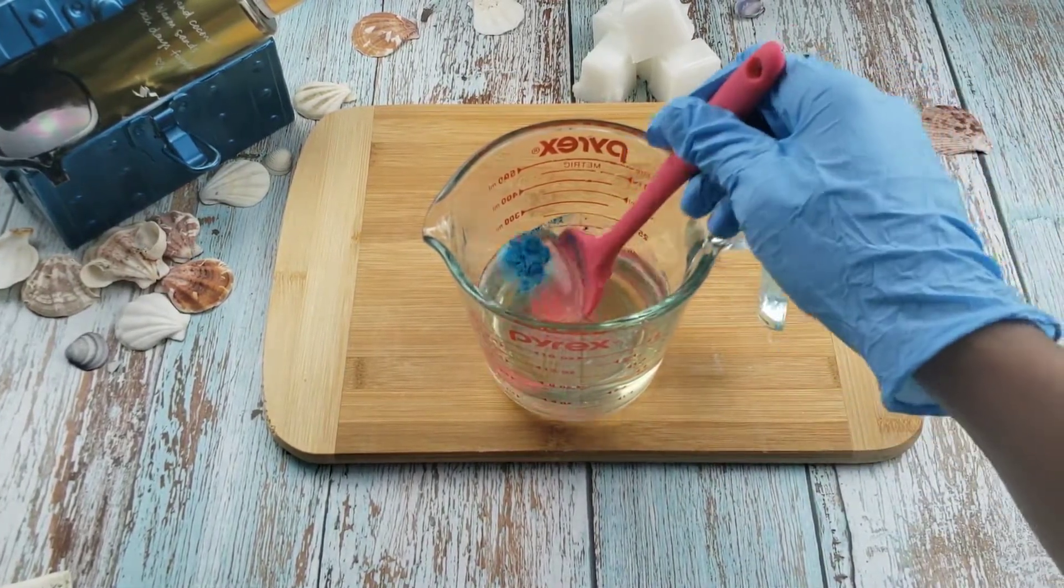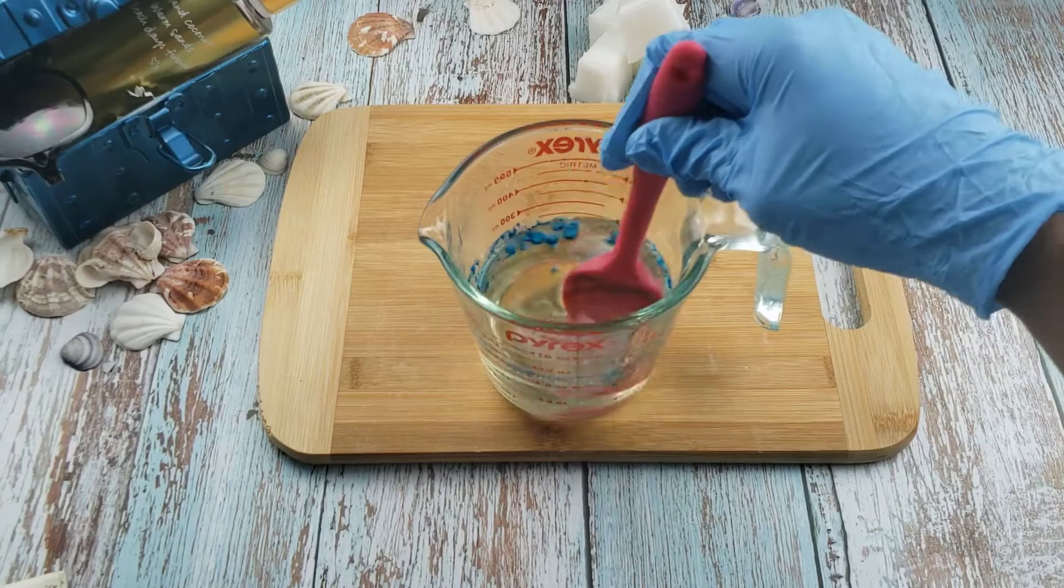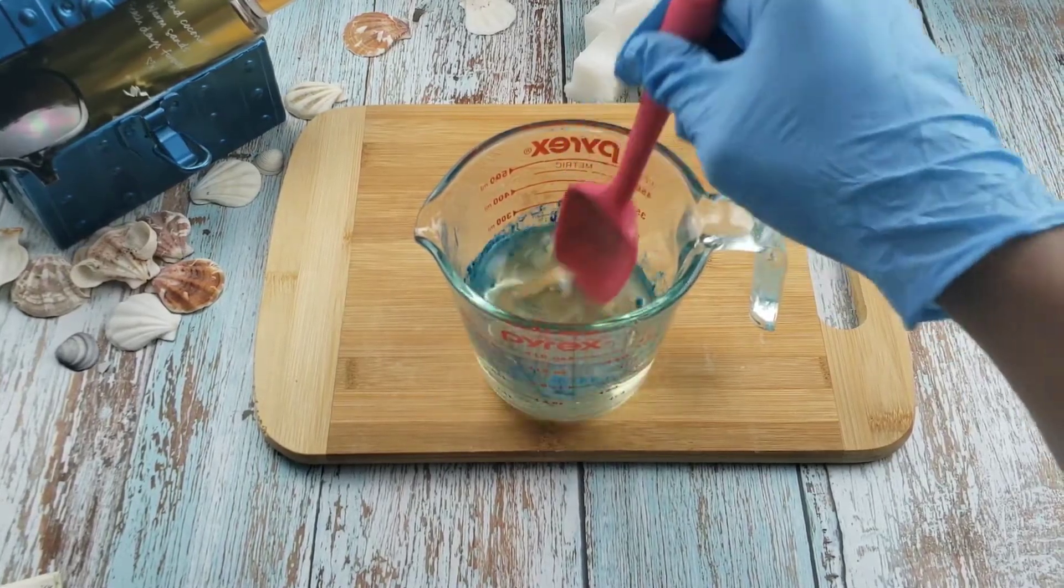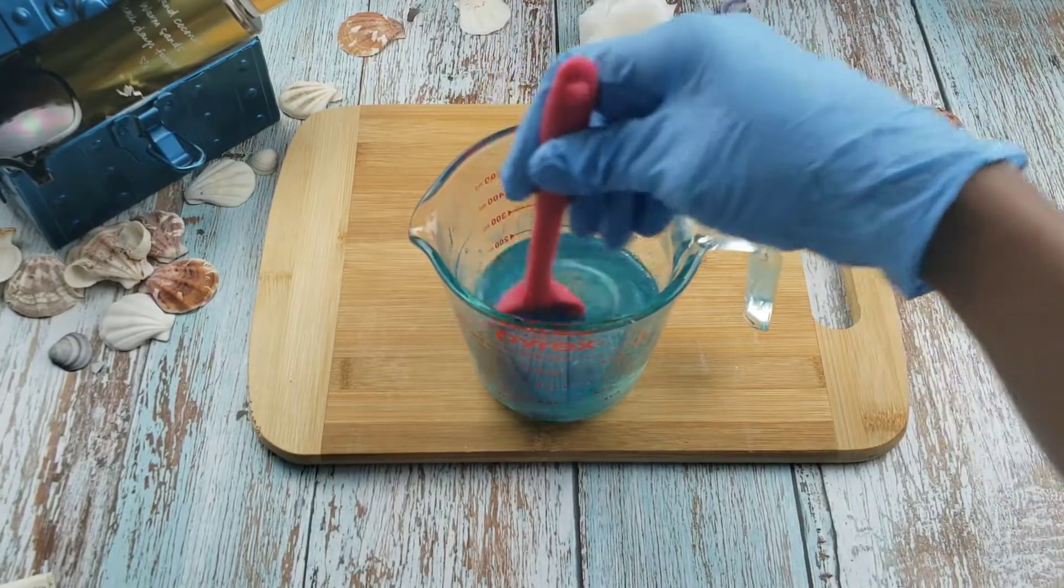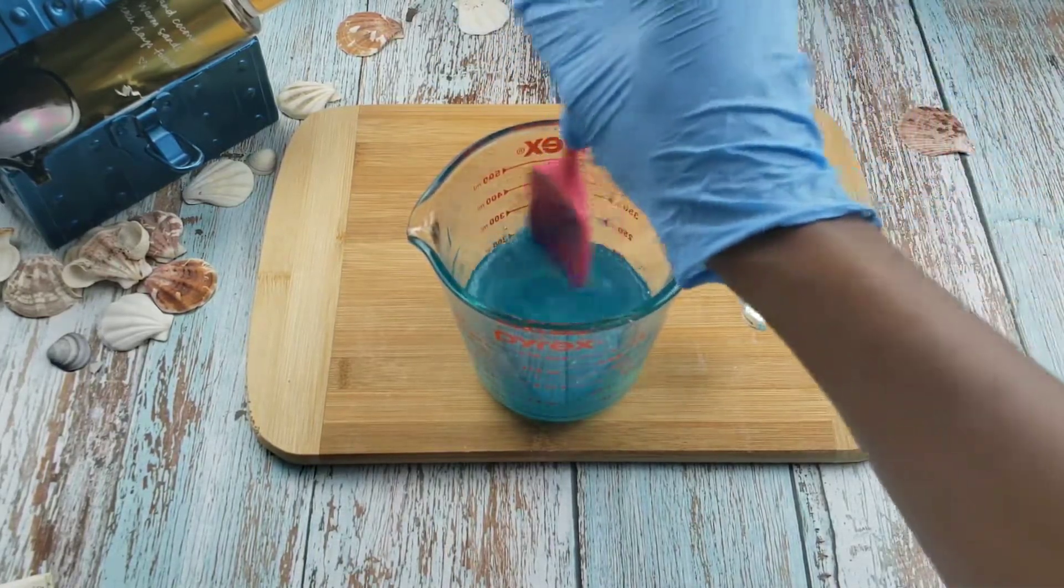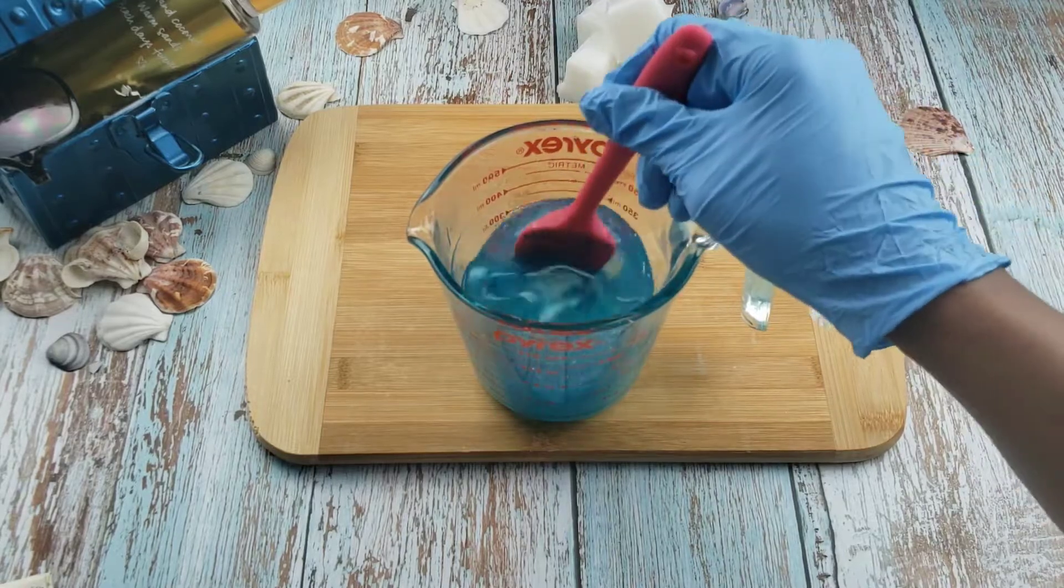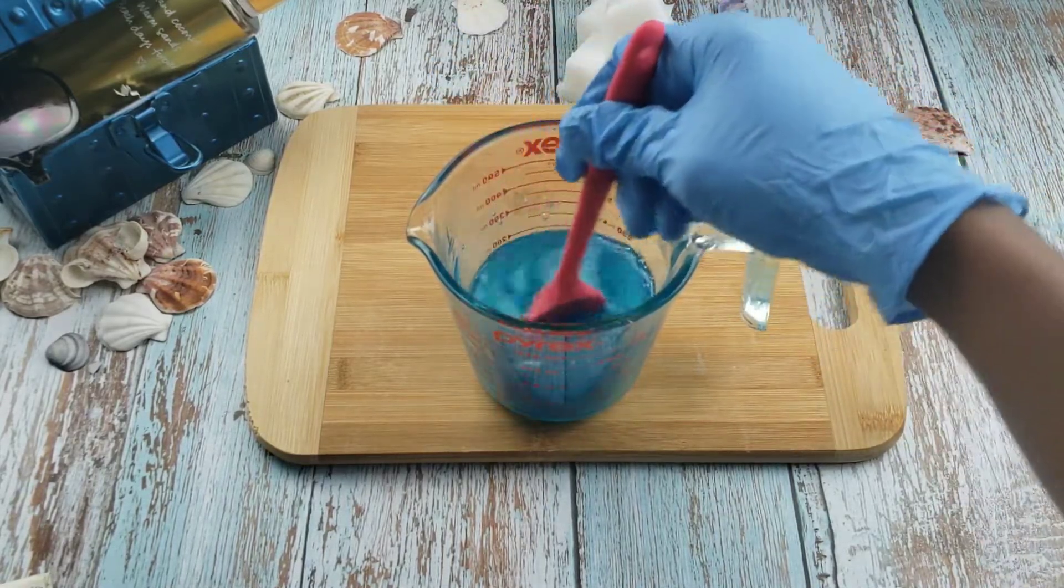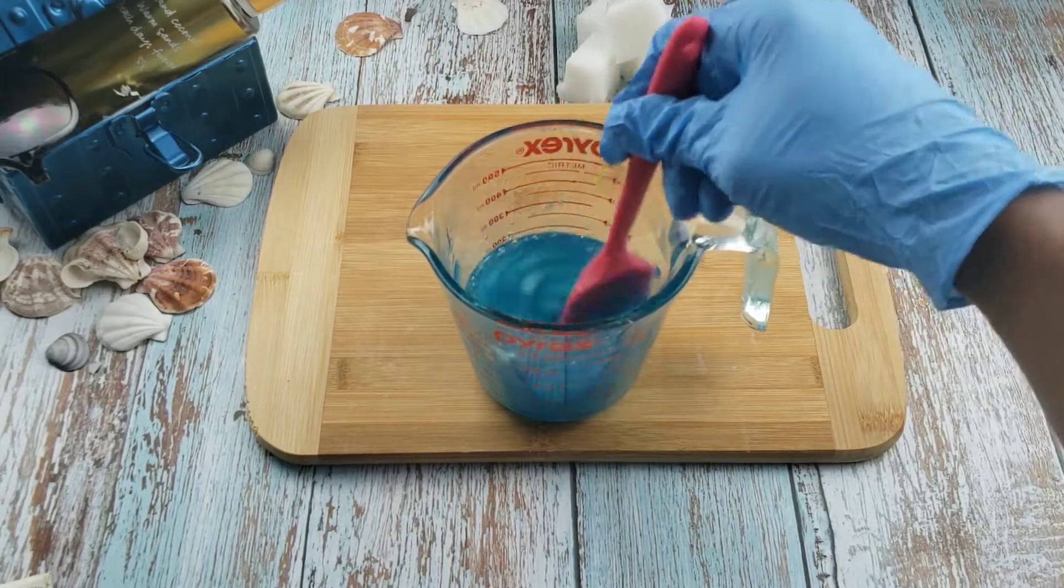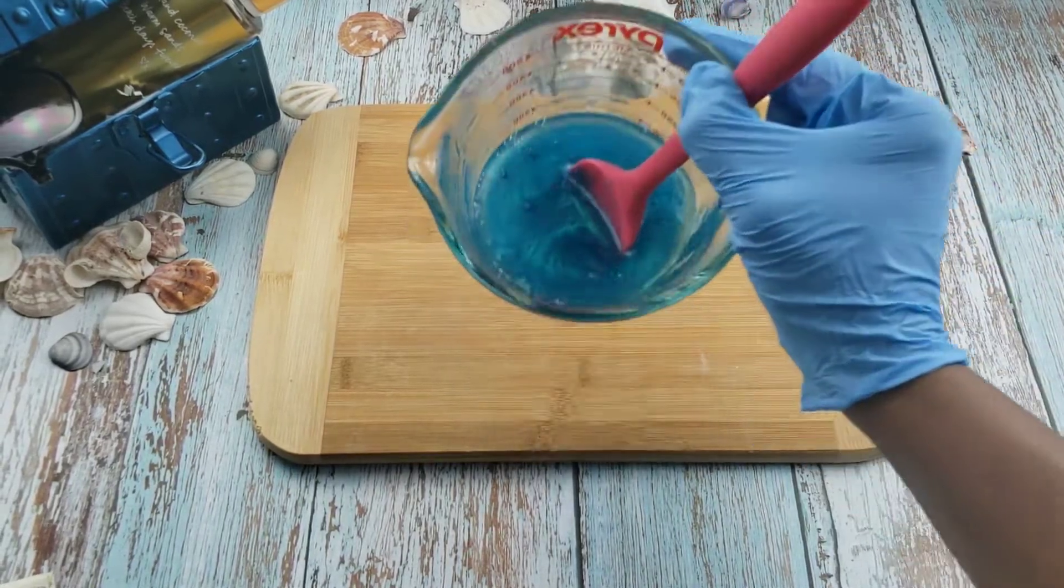Another way to add mica into a soap base is to mix it with isopropyl alcohol first, then add the alcohol mica mixture to the base. This will prevent clumping. And this is what the base is looking like. It has a lovely shimmer to it from the mica and I really like this color.